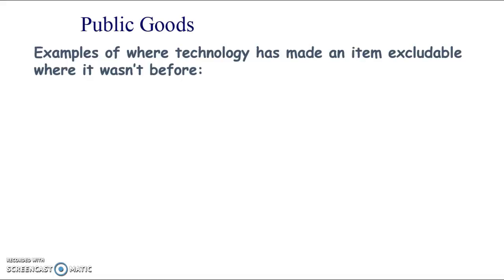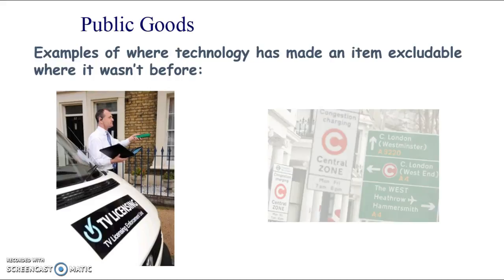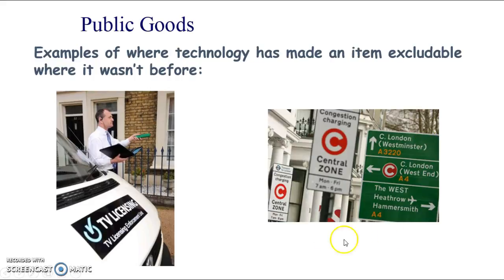Another specification objective is examples of where technology has made an item excludable where it wasn't before — remember it's that excludability that caused the free rider problem. Public broadcasting is one example: before devices to track people it would have been thought of as non-excludable, but now we can find people watching TV without paying their TV licence.